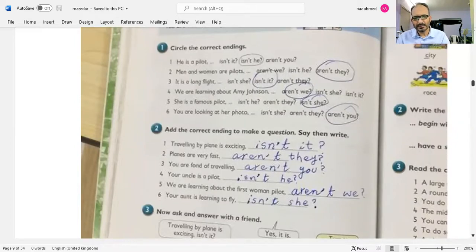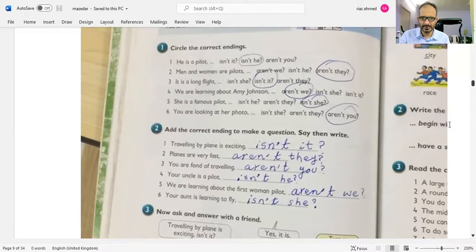Your uncle is a pilot, isn't he? We are learning about the first woman pilot, aren't we? Your aunt is learning to fly, isn't she? Thank you.